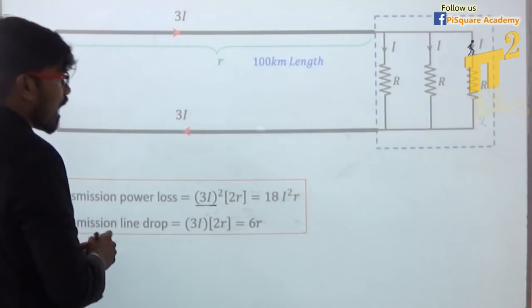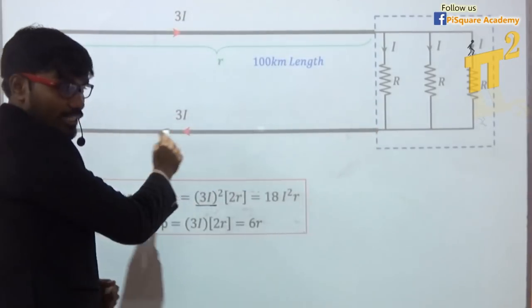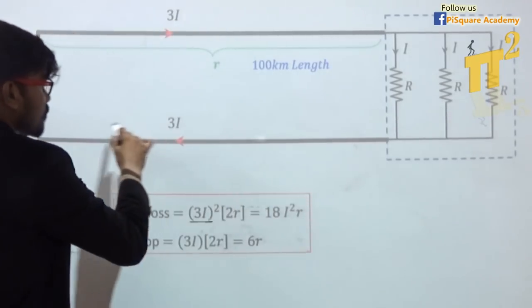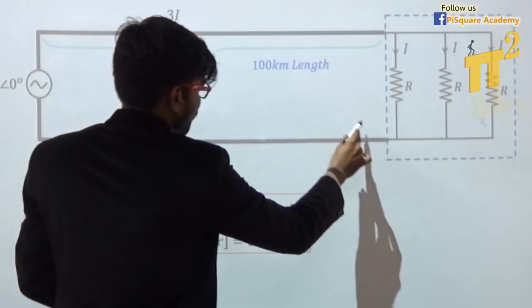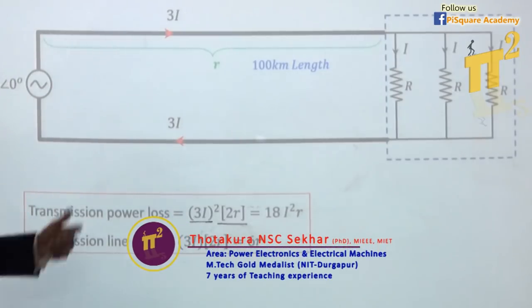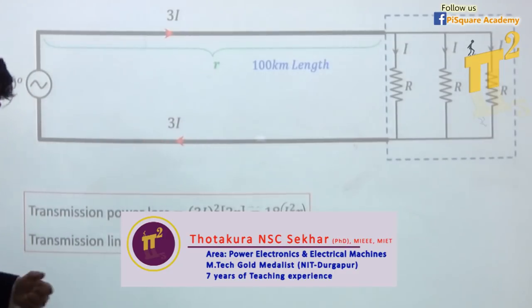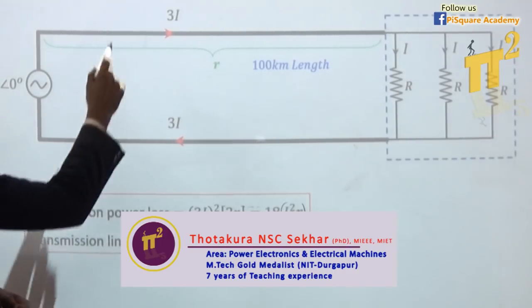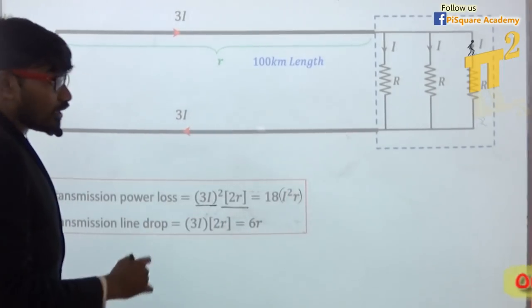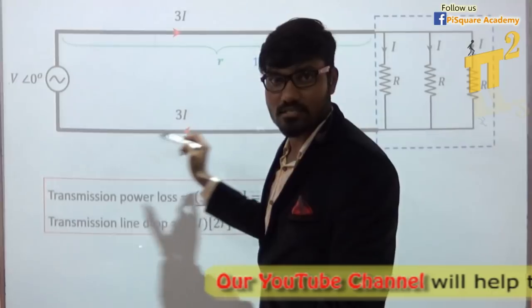The resistance of the line is small r. Since current returns through the same transmission line in single-phase, the return wire is also 100 km, also having resistance r — total 2r. So transmission line losses = (3i)² × 2r = 18i²r. Voltage drop = current × resistance = 3i × 2r = 6ir. Keep these two figures in mind: losses = 18i²r and voltage drop = 6ir.